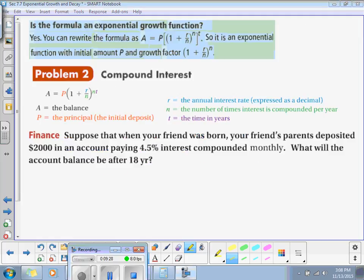So suppose when your friend was born, your friend's parents deposited $2,000 in an account paying 4.5% interest compounded monthly.